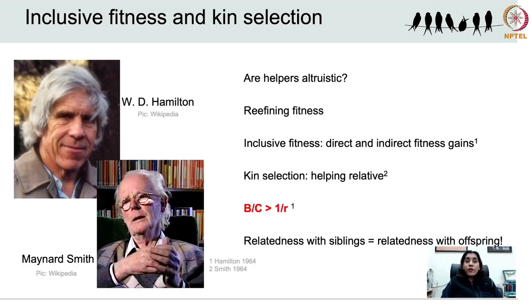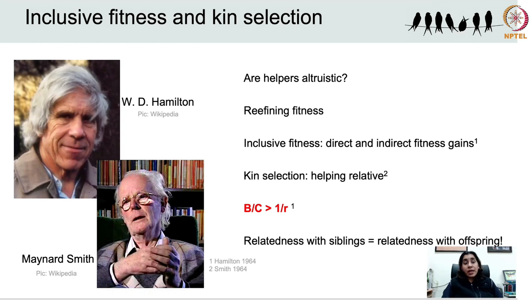We need to look at the benefit of an act in terms of B, R, and C. As long as the recipient is a sufficiently close relative of the actor and the benefit to the recipient outweighs the cost to the actor, the altruistic behaviour can still evolve through natural selection. In other words, inclusive fitness and kin selection together provide the foundation to understand how seemingly altruistic behaviour may evolve if it increases the proportion of an individual's genes in the next gene pool via direct and indirect fitness.